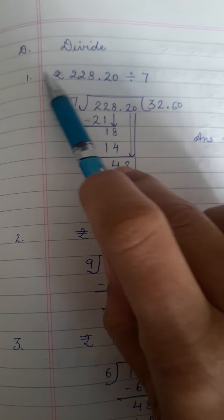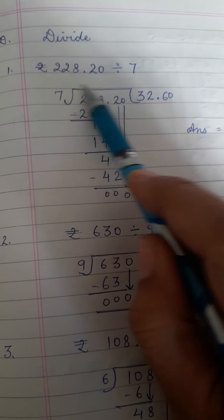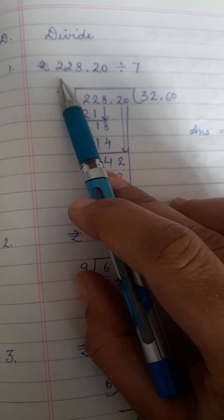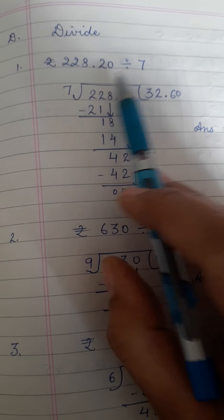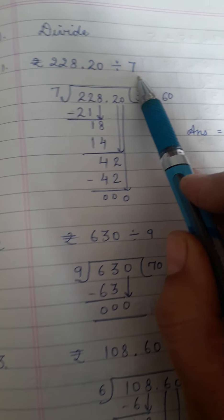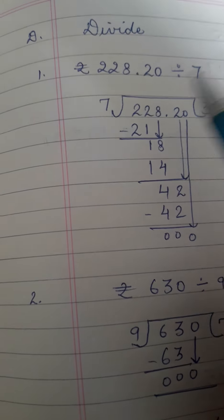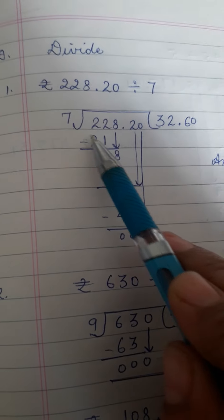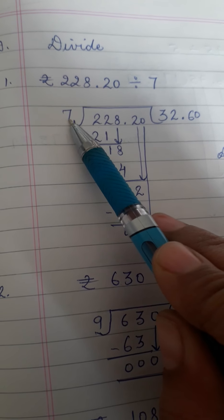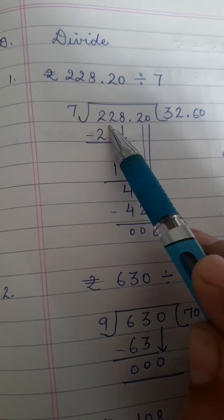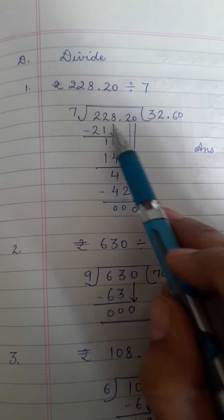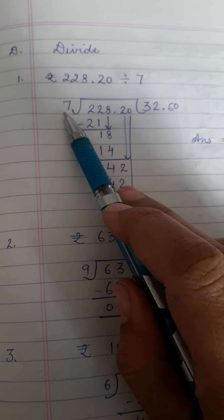Now question number D is divide. Now you are going to divide money. Like rupees 228.20 paisa divided by 7. These are the decimal numbers which you are going to divide. Understand it carefully. This is the question and this is the dividend divisor.